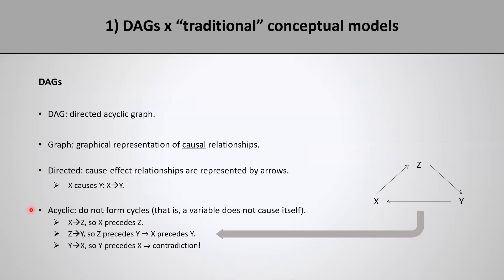DAGs are also acyclic, which means that they do not form cycles. At first this might seem arbitrary and unwarranted, but it actually makes a lot of sense once we think about it. Consider a cycle where variable X causes Z, which causes Y, which causes X, thus forming a cycle. If X causes Z, then X precedes Z in time. Similarly, Z precedes Y in time, which precedes X in time. But this would imply that X precedes itself in time, which is of course impossible. Therefore, cycles in a DAG don't make sense and are not allowed.